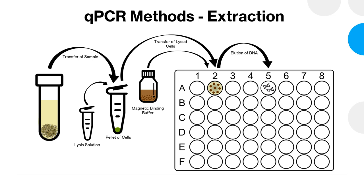Then a lysis solution is added to the pellet of cells and incubated for a set amount of time, allowing those total yeast and mold cells to be broken open so that DNA can be accessed — without lysis, you can't get into those cells and pull the DNA out. Once those cells have been lysed, they are transferred to a 96-well plate and mixed with a magnetic binding buffer, which attaches to the DNA and prevents it from being lost during the rest of the process.